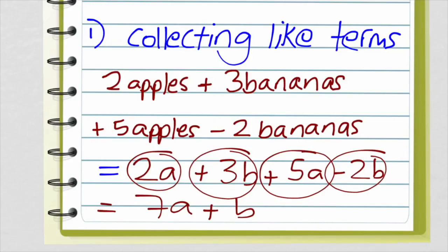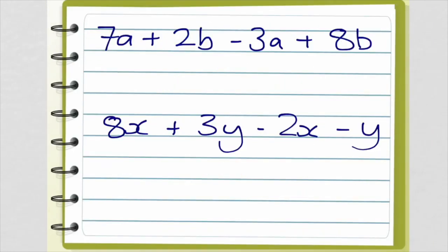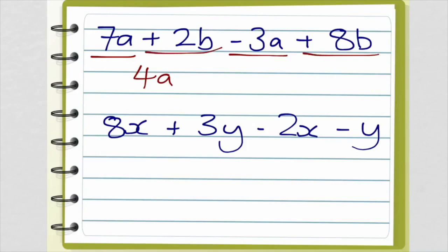Okay, let's have a look at these two examples here. 7a plus 2b minus 3a plus 8b. I'm going to have a look at the a's first of all. It's positive 7a take away 3a. 7 take away 3 is 4a. And then my b's: positive 2b plus 8b is plus 10b.